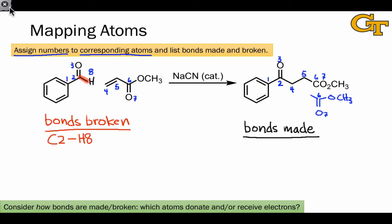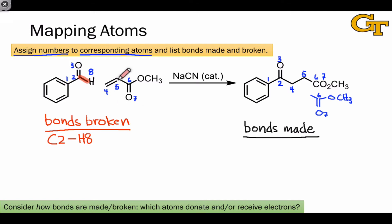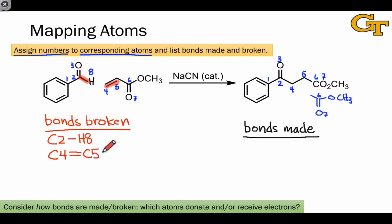Bonds broken may be single, double, or triple bonds. One thing we should notice about carbons four and five is that they go from being linked by a double bond to being linked by a single bond only. This implies that the pi bond linking carbons four and five is broken in the course of this reaction. To show that, we could write C4–C5 with a double bond linkage, or highlight just one of the two bonds to show that only one of the two is actually broken.